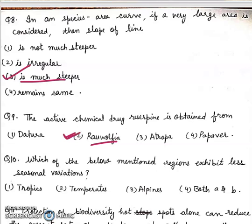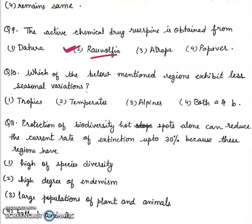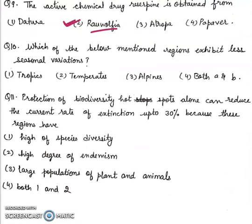Question 10: Which of the below mentioned regions exhibit less seasonal variations? Tropics, Temperate, Alpines, Both A and B. Right answer will be tropics.